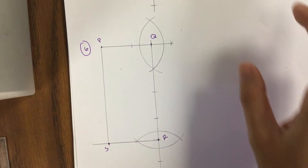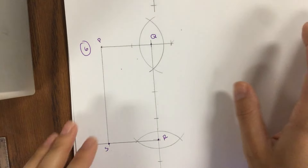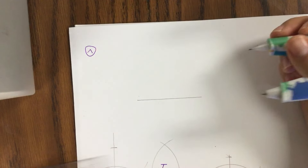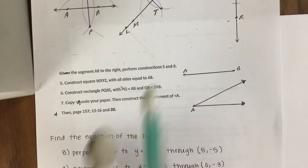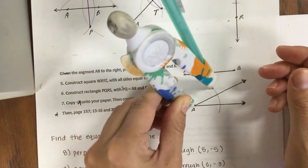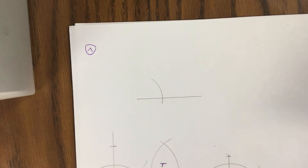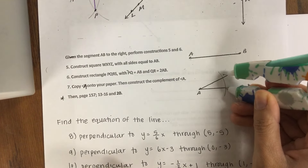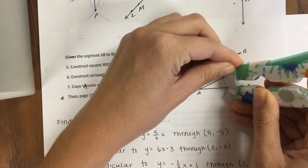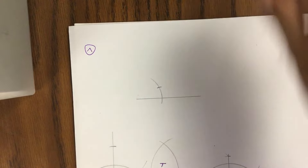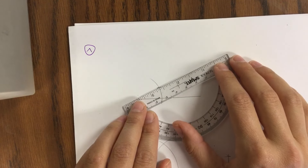Number 7: we want to copy angle A onto our paper and then construct the complement of A. For number 7 we're going to start off with the side of an angle. Then I grab my paper and copy angle A. The very first thing I do is draw an arc across the angle so I know where I'm measuring the width. I transfer that same arc onto my duplicate, then go back to angle A and measure across the angle at the arc, and transfer that onto my copy. So here is angle A.